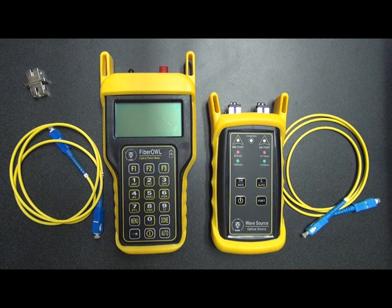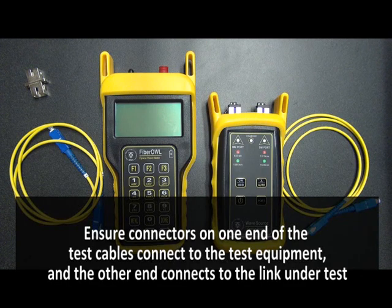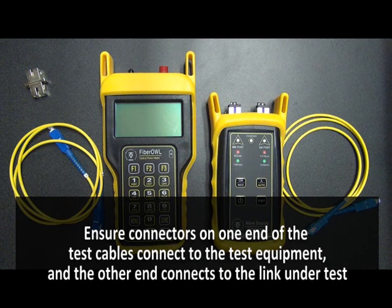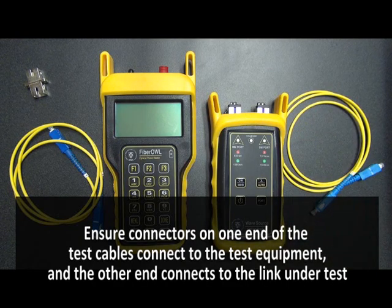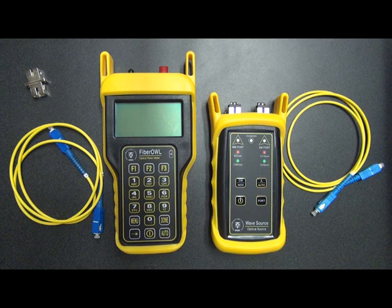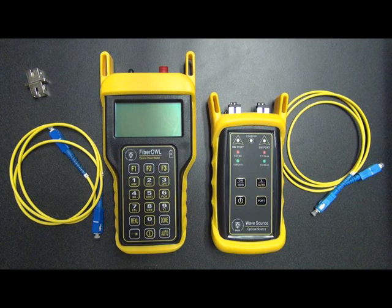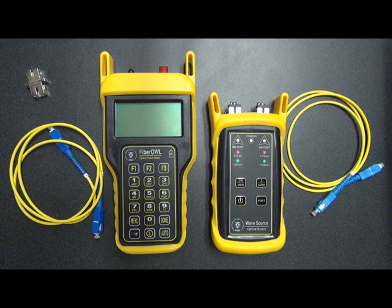One thing to make sure of when choosing test cables is that the connector types match the testers and the patch panel that you're going to be testing. They might not be the same, so one end of the patch cable needs to be able to connect into the testers and the other end needs to connect into the link under test. This could be SC to LC, SC to ST. It doesn't have to match. For this purpose, we're just going to assume that the patch panels are SC.